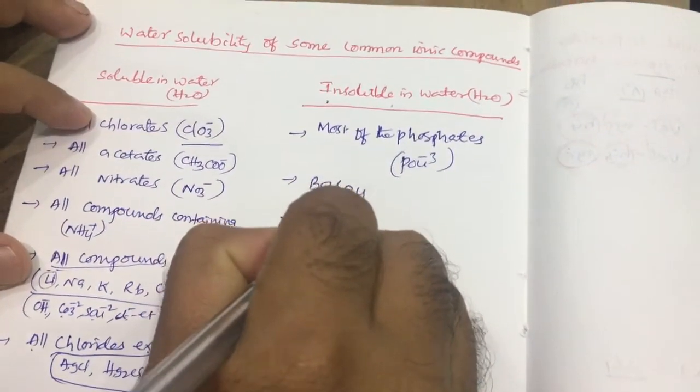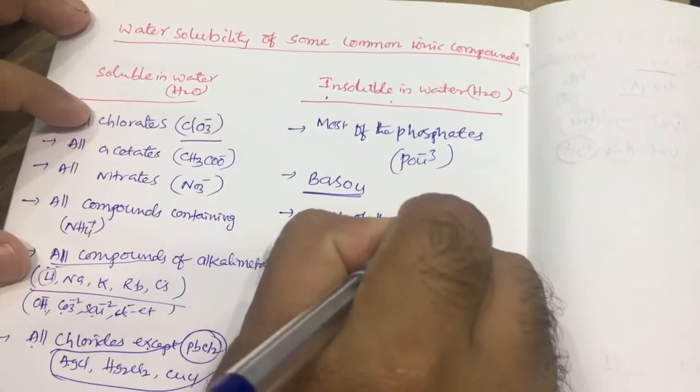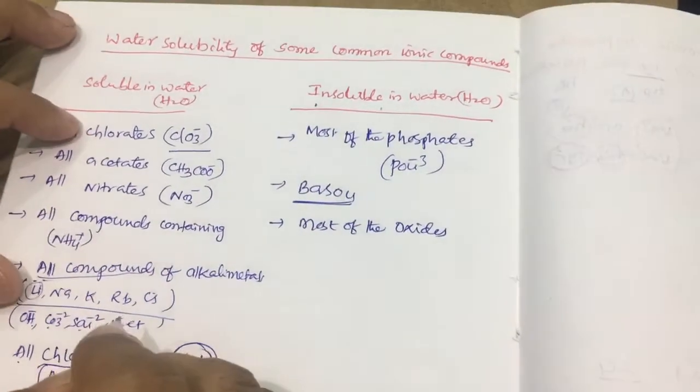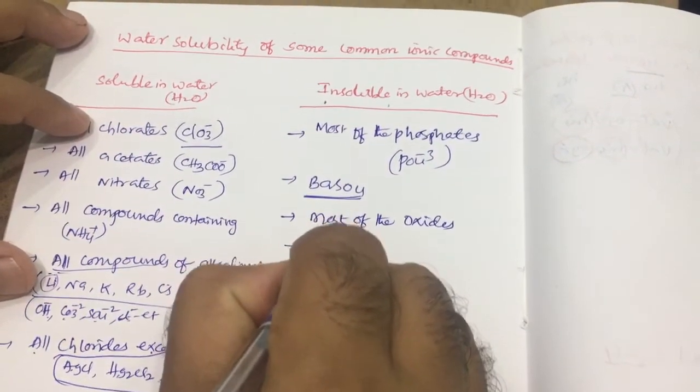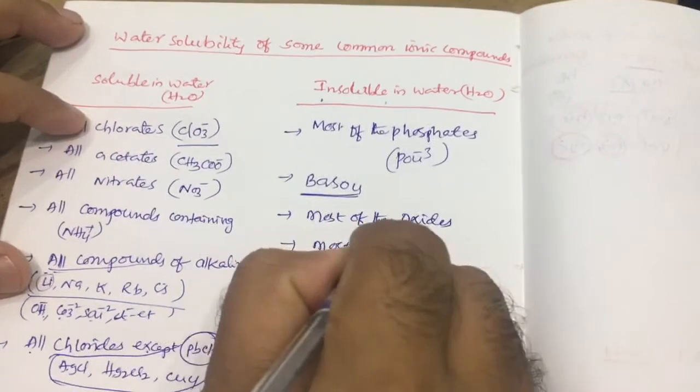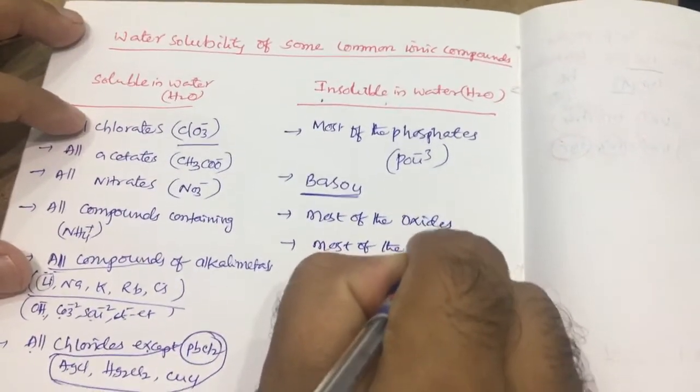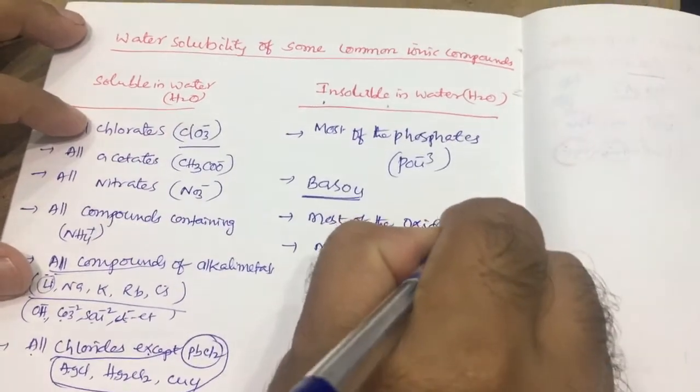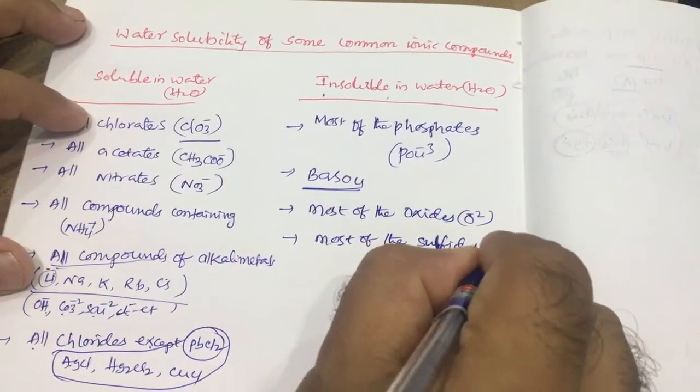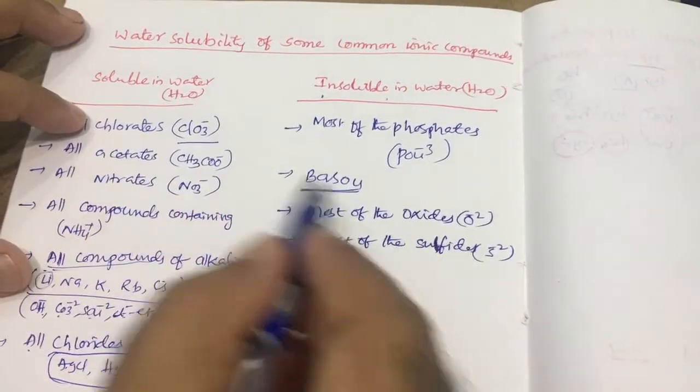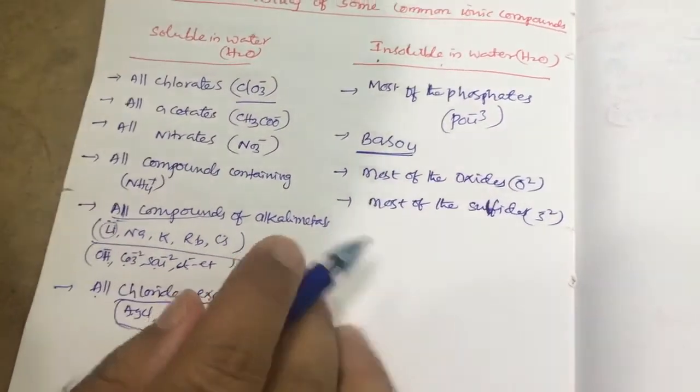Next, most of the oxides are insoluble in water. Most of the sulfides also. Oxide, this is O^2-. Along with this, any sulfides mean S^2-. Along with any positive charges, that is insoluble in water.